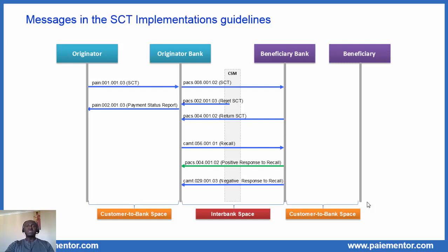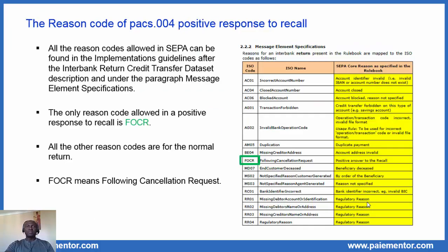Now let's take a closer look at the specificities of the PAX4 positive answer to a recall. The first specificity is the reason code of this PAX4. As a reminder, all the reason codes allowed in SEPA can be found in the implementation guidelines, under the interbank return credit transfer dataset description and under the paragraph message elements specification — that's what you see on the right side. The only reason code allowed in a positive response to a recall is FOCR, and this is highlighted at many places in the implementation guidelines. All the other reason codes listed in the implementation guidelines are for the normal return. FOCR means 'Following Cancellation Request', indicating that the PAX4 was sent as a positive response to a recall.